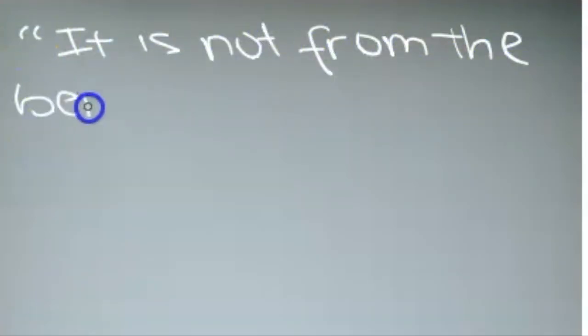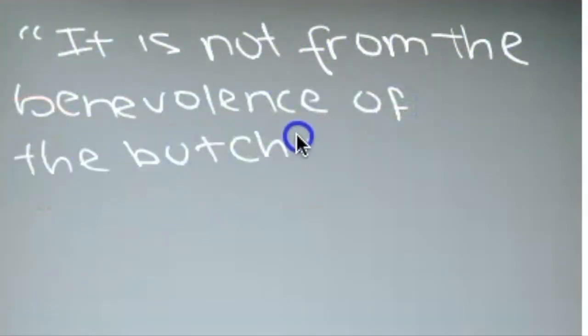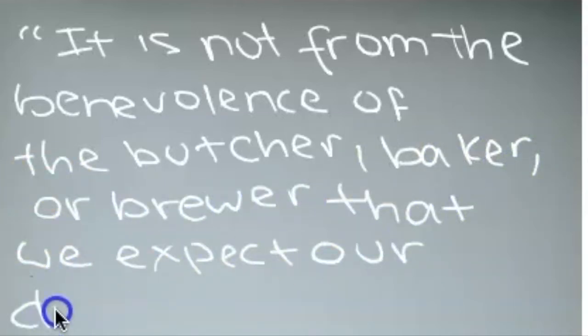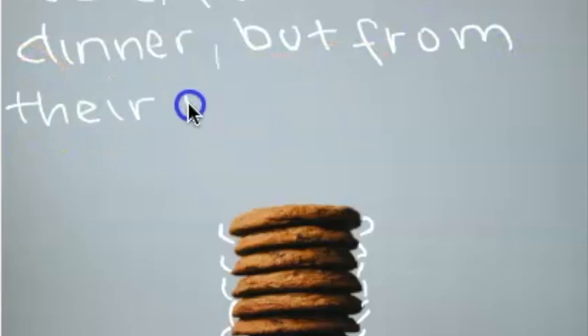Let's start off with a quote from the father of modern economics, Adam Smith. He says, it is not from the benevolence of the butcher, baker or brewer that we expect our dinner, but from their regard to their own self-interest.